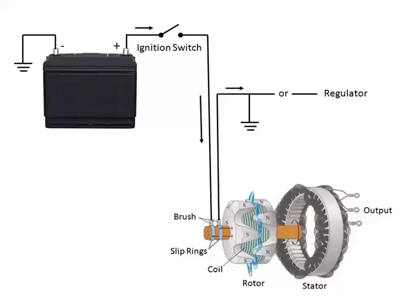In alternator circuits, voltage is supplied from the ignition switch to the alternator field terminal when the ignition switch is turned on. Current then flows through the insulated brass slip rings, the field winding, and back through the other slip ring and brush to ground. This current flow through the field winding creates a magnetic field around the rotor, and the interlacing fingers on one side of the rotor become north poles.